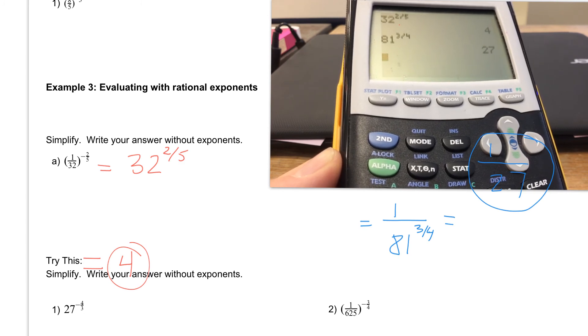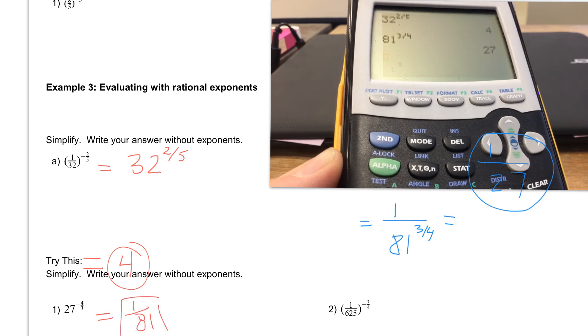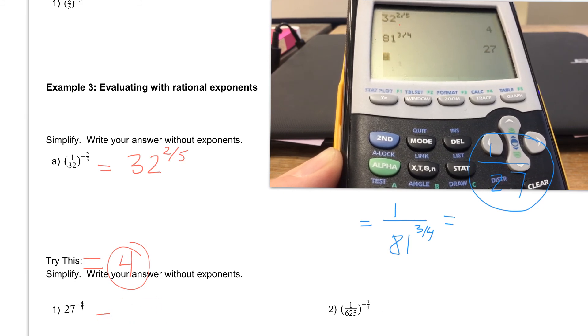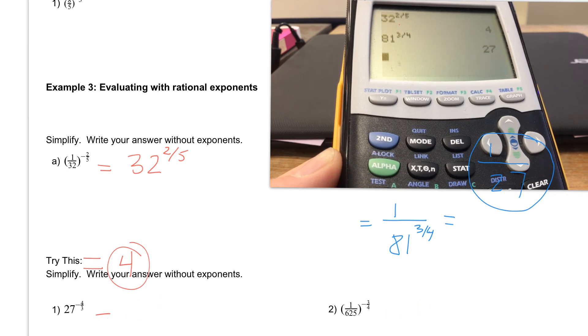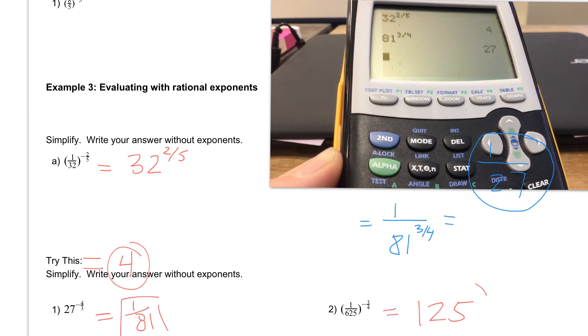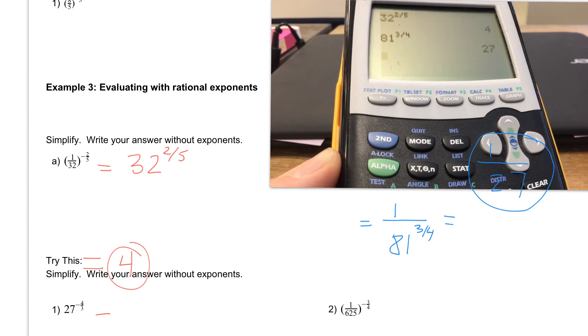If you did number 1 correctly, you should get number 1 to be 1 over 81. And if you did number 2 correctly, number 2 you should get to be a positive 125. If you have questions on either one of these, please let me know.